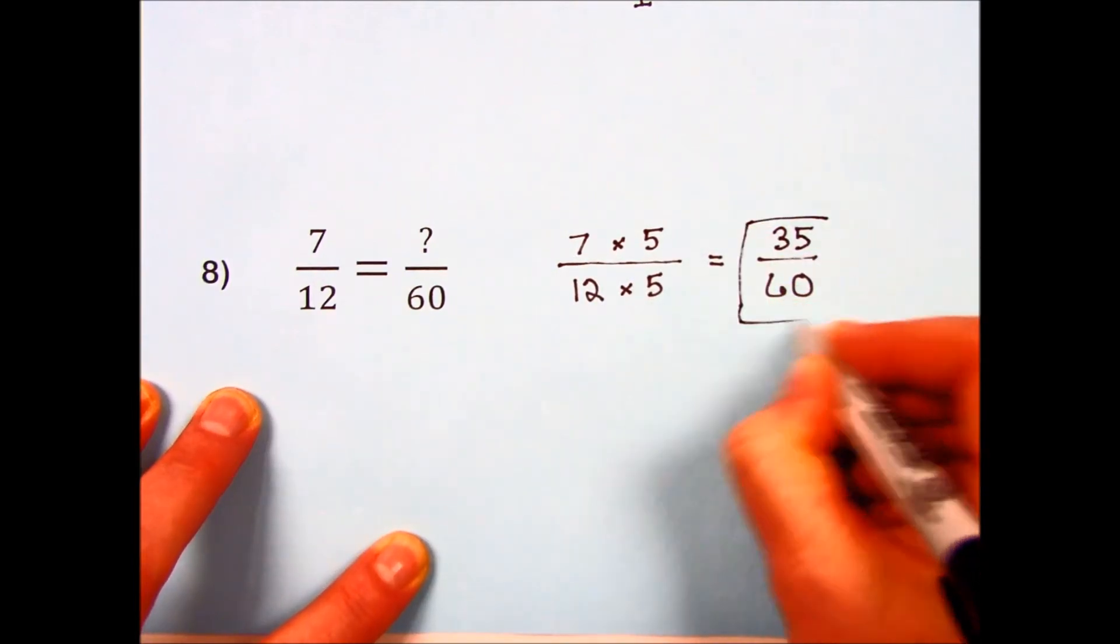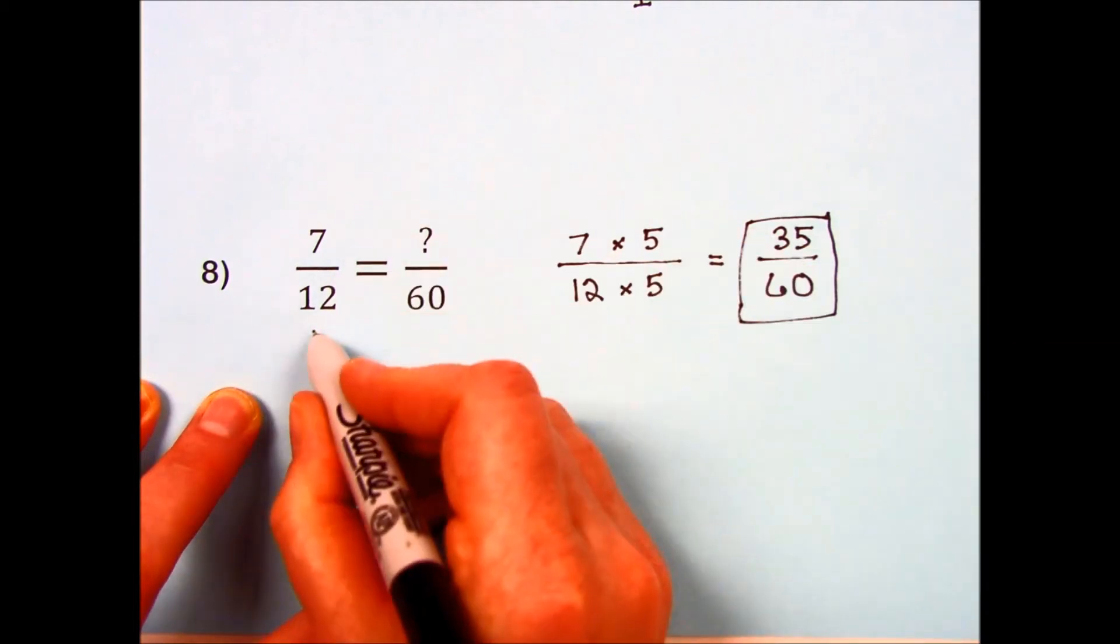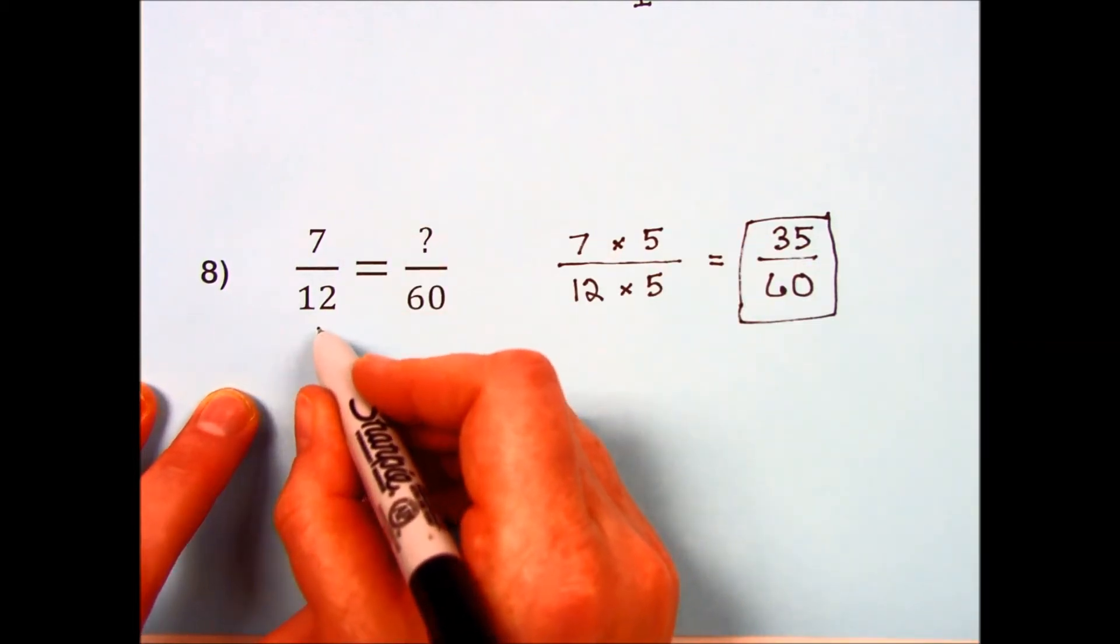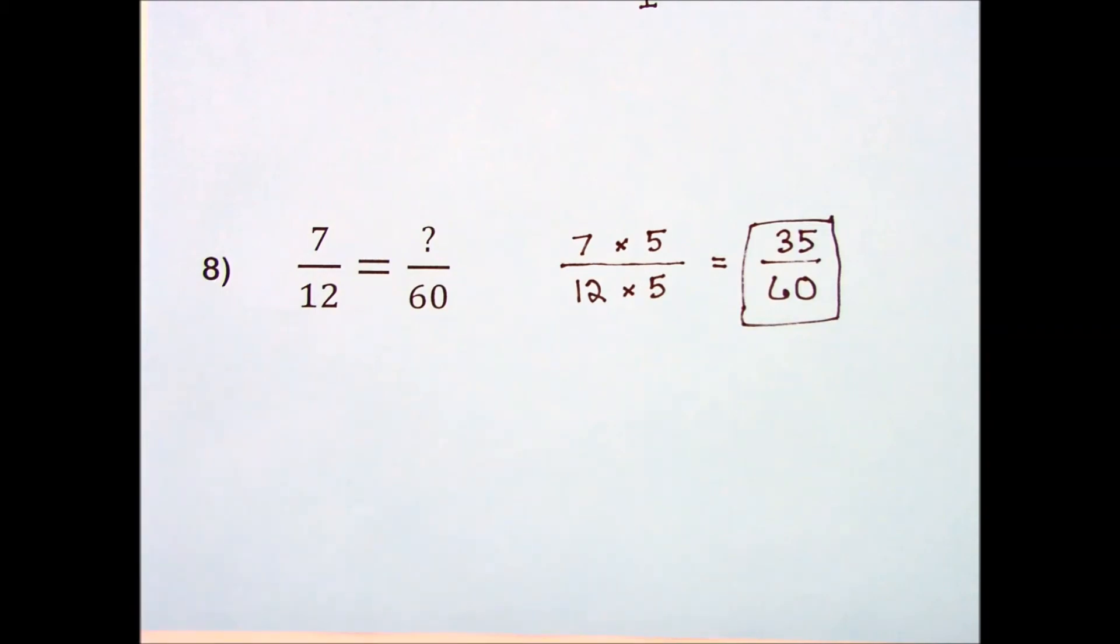35 sixtieths is equivalent to 7 twelfths, with just a different way of writing the same value.